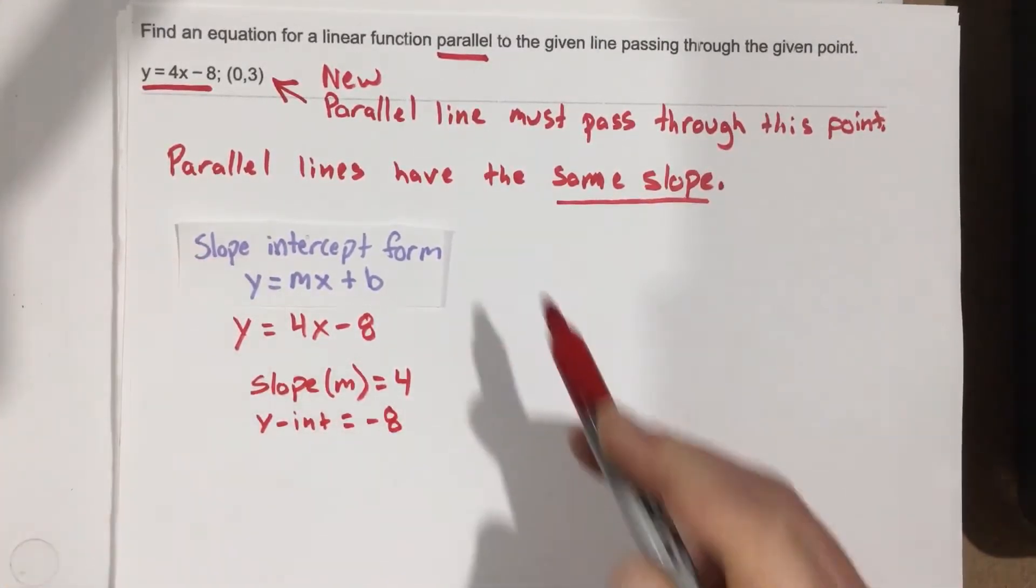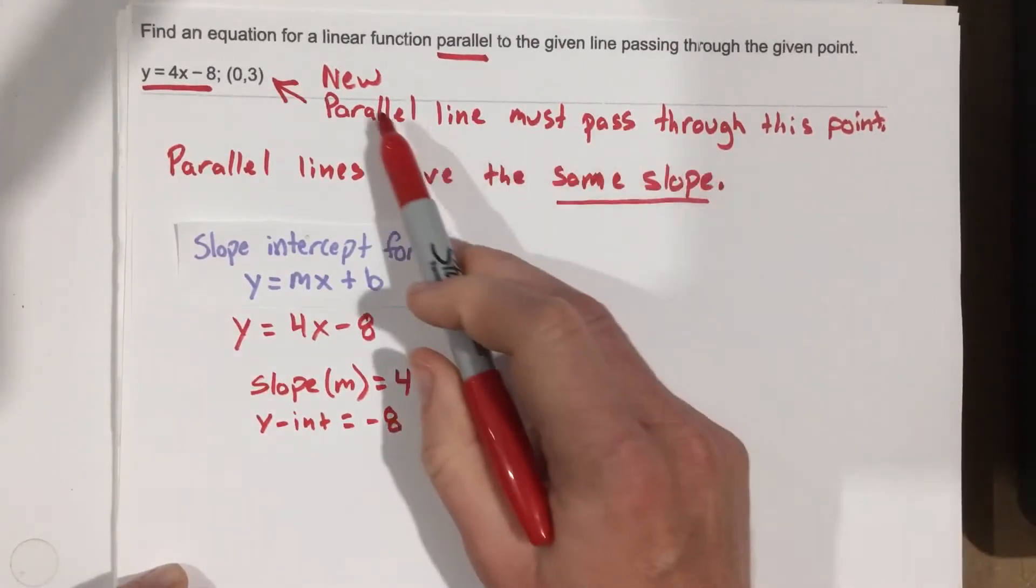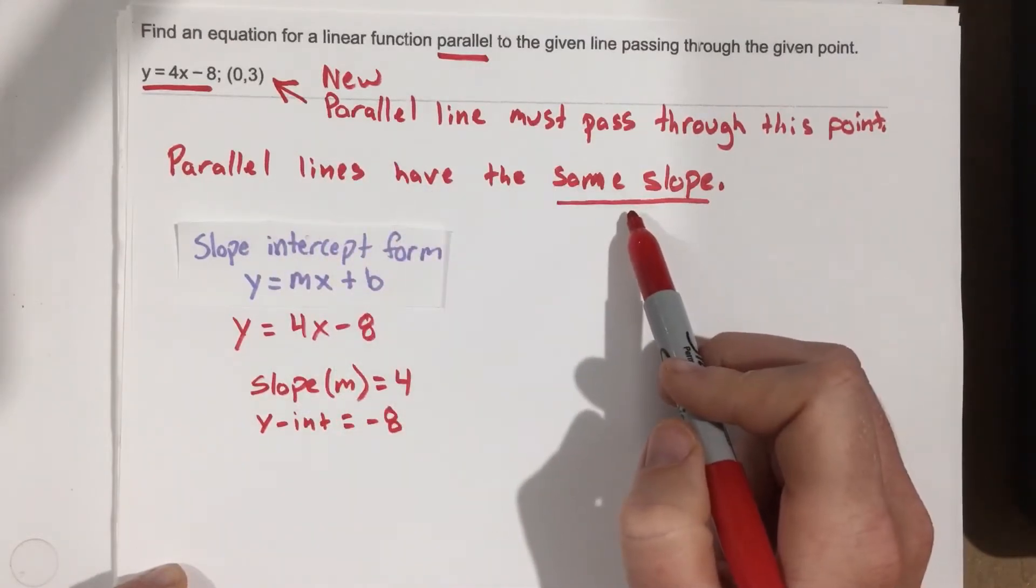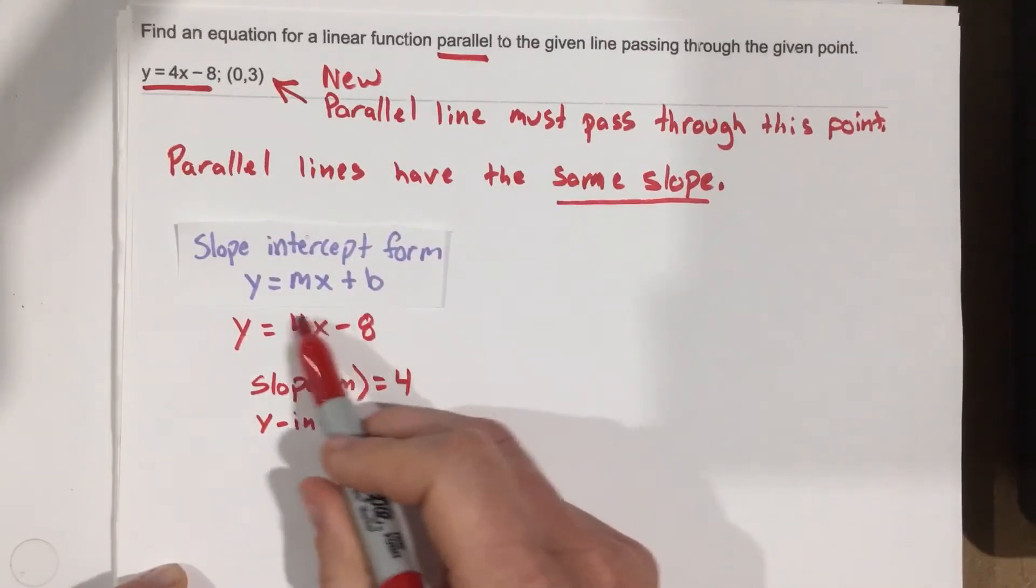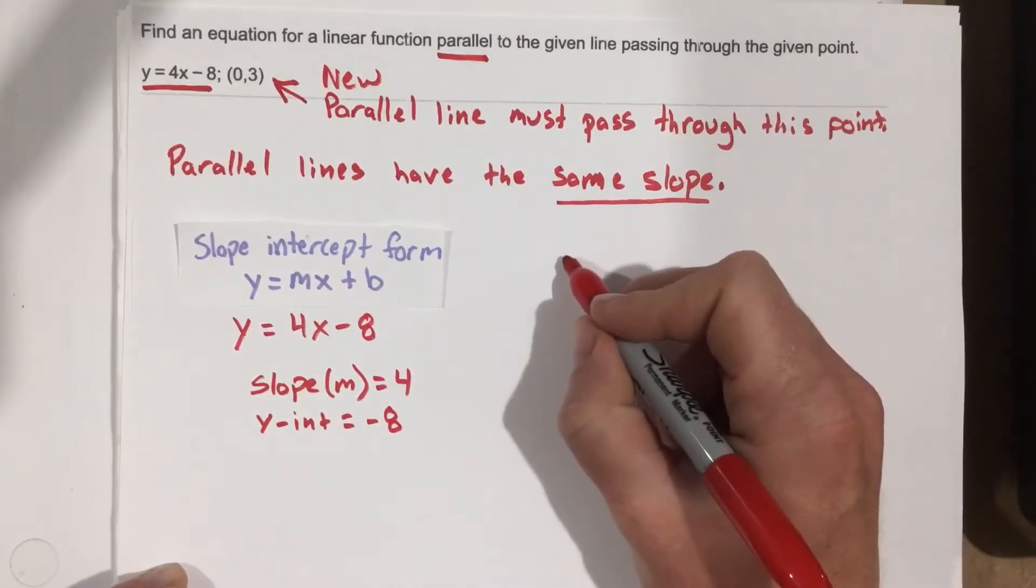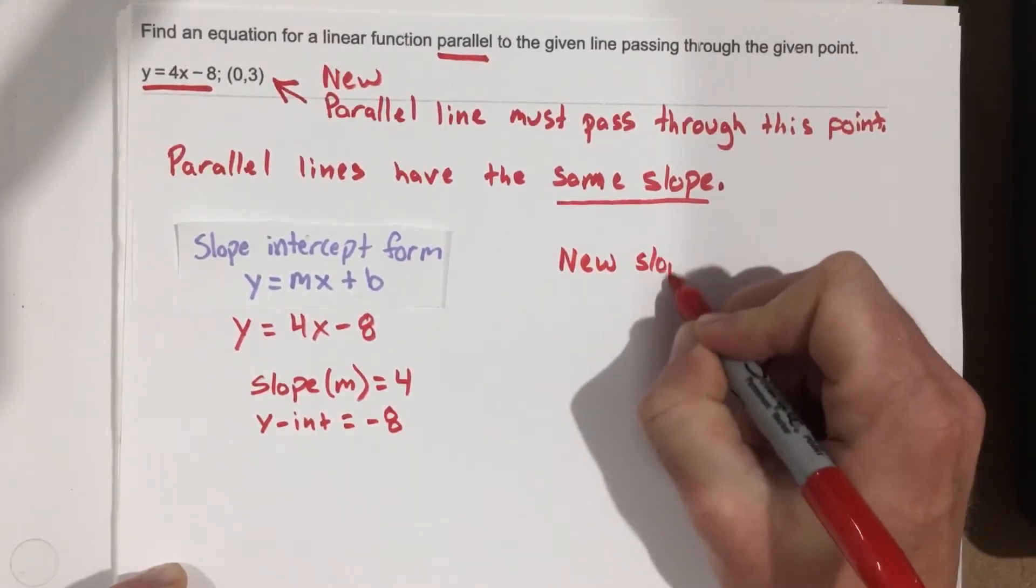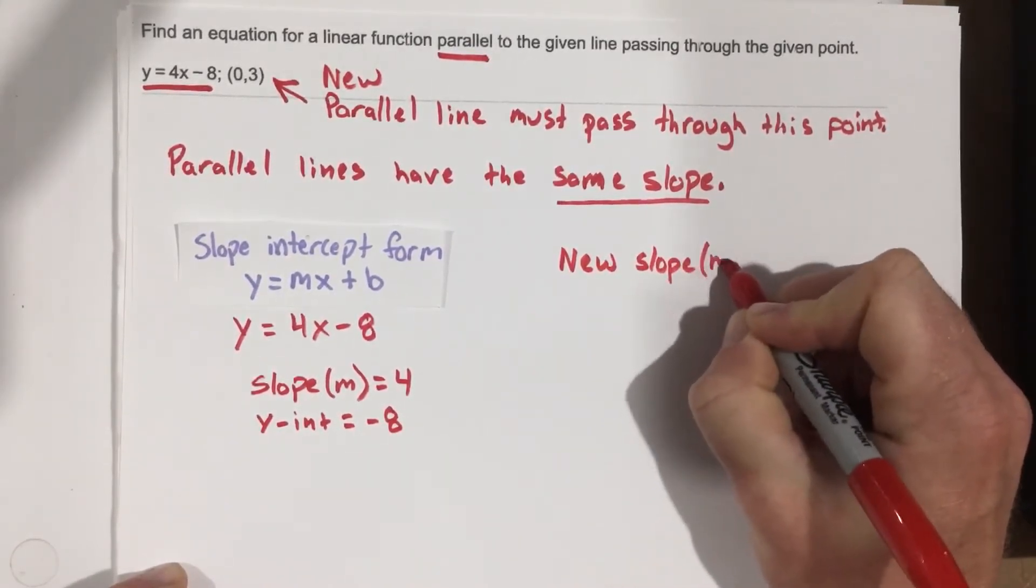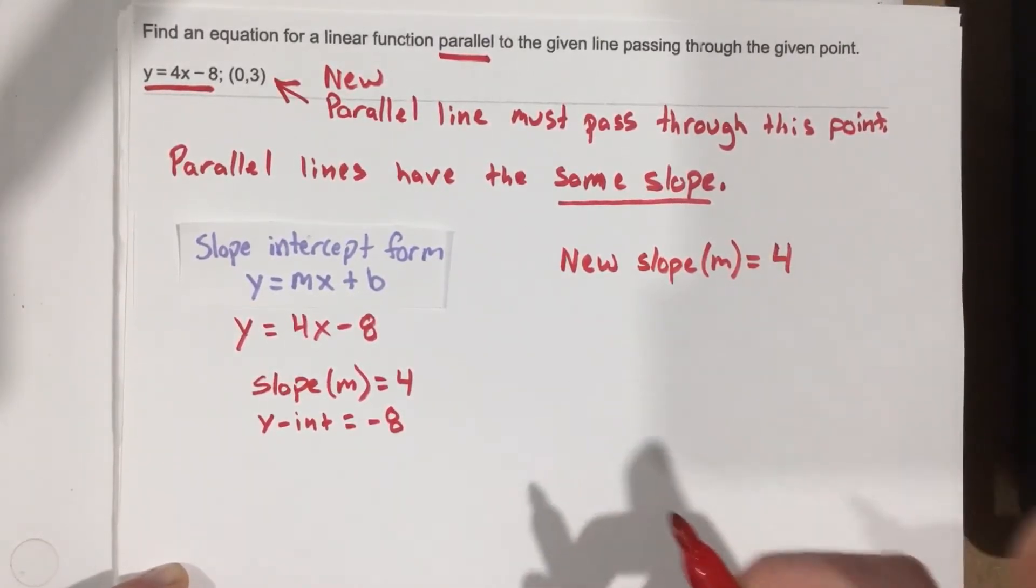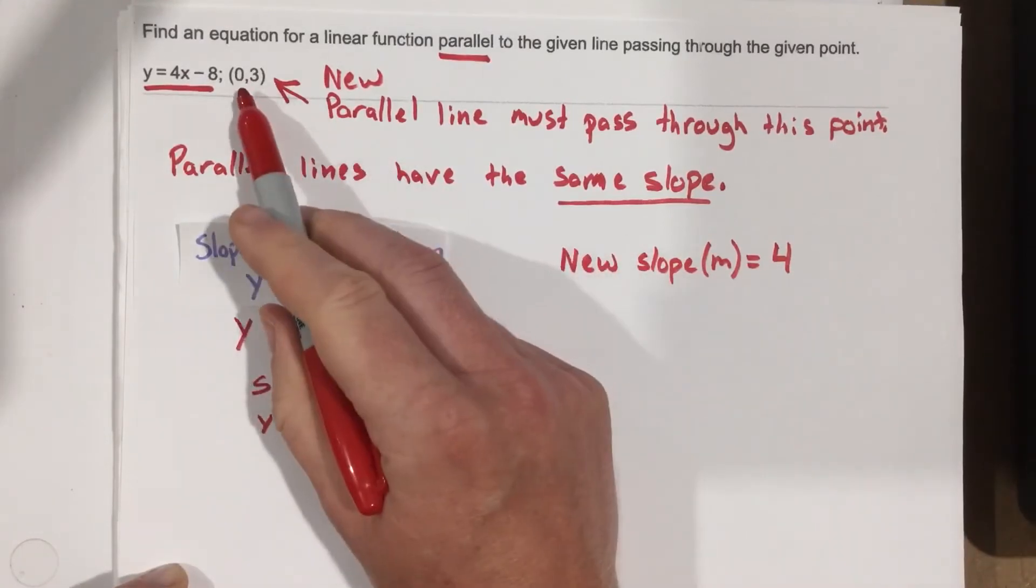Now, for a parallel line, we don't actually need the y-intercept. Parallel lines have the same slope. So the only thing we need from this equation to write the new equation is the slope. So I'm going to say my new slope is going to be 4, and I want this new line to pass through this point, 0, 3.